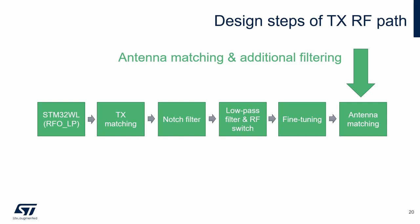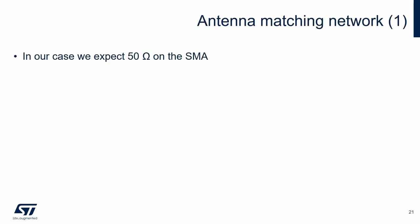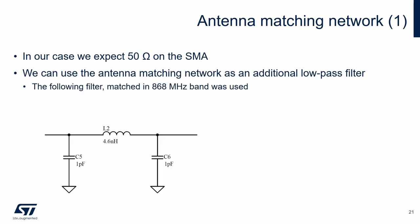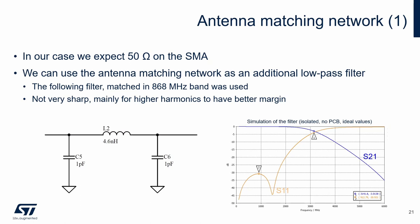Let's focus on the antenna matching network. In our case, we expect 50 ohms on the SMA connector, so from the matching point of view it matches impedance from 50 ohms to 50 ohms. More important is the filtering feature of this structure — we use it as an additional low-pass filter. The filter is symmetrical, matched at both ends in the 868 MHz band. The filter calculation was based on the value of an inductor available at the time. The calculated component values are ideal. The filter is not very sharp, but in our case it helps, and the performance can be improved further if needed.